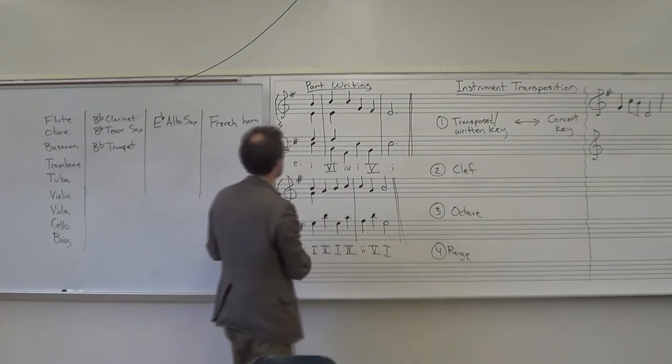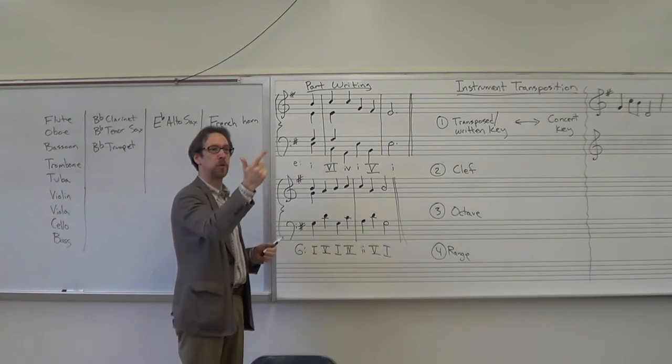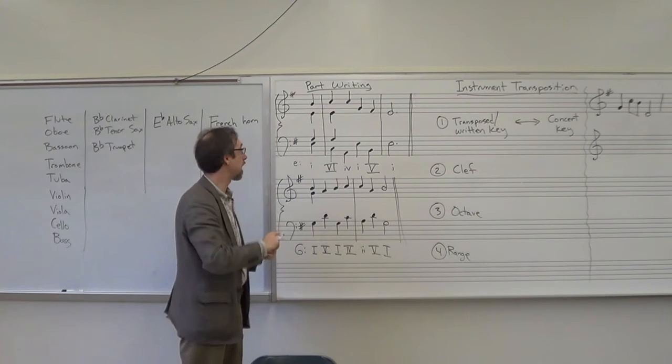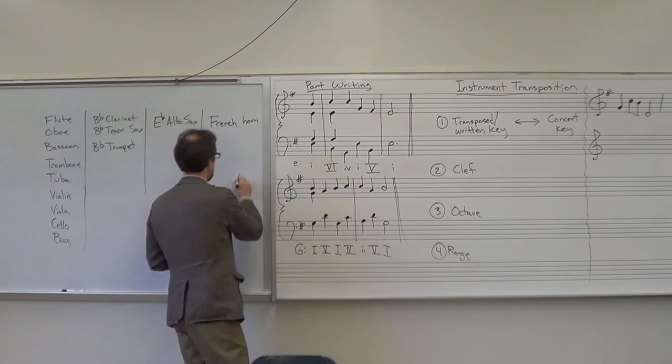Then we look at our next chord, which is a four chord in the key of E minor. E, F sharp, G, A. So it's an A chord: A, C, E.